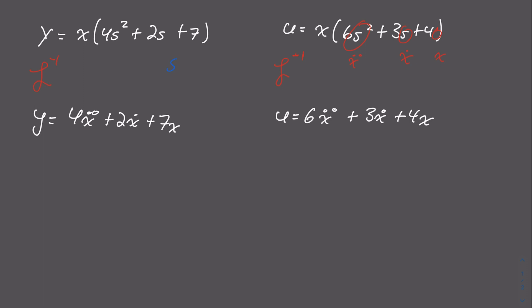As you may have covered earlier in your semester, s² always gives you x double dot (ẍ), s gives you x dot (ẋ), and if there's just an integer, that gives you simply x. You can see that reflected here with the ẍ, ẋ, and regular x terms.